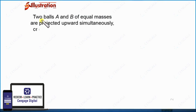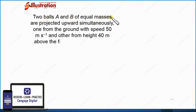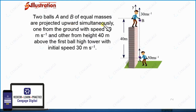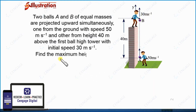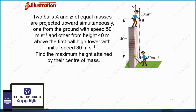In this illustration, it is given that two balls A and B of equal masses are projected upward simultaneously — one from the ground with speed 50 meters per second in the upward direction, and the second from the top of a building of height 40 meters, also projected in the upward direction with speed 30 meters per second. Find the maximum height attained by their center of mass — that is, we need to calculate the maximum height raised by the center of mass of the A and B system.